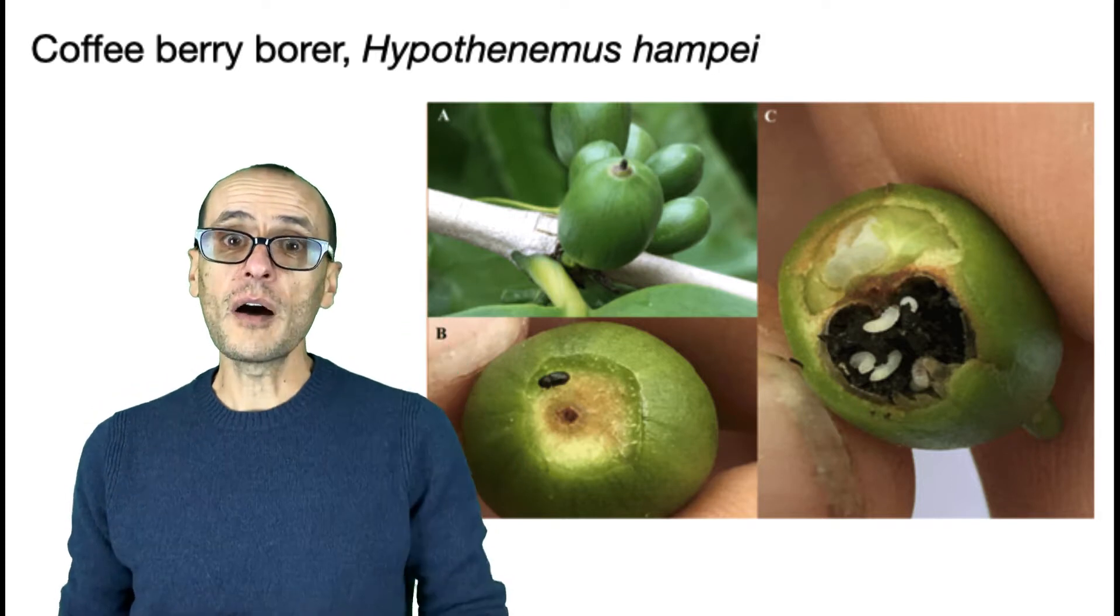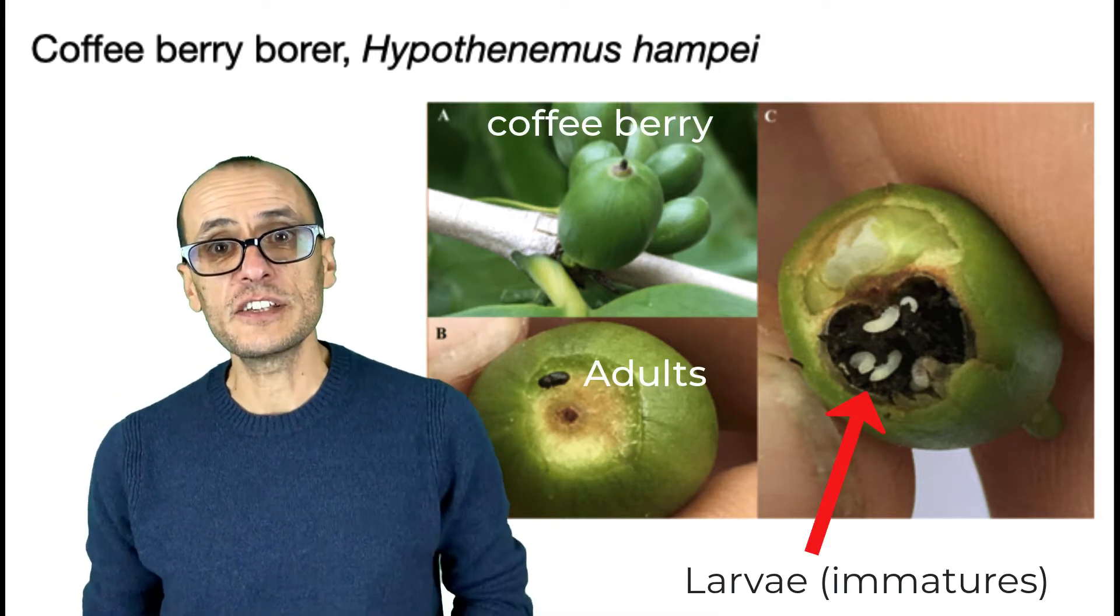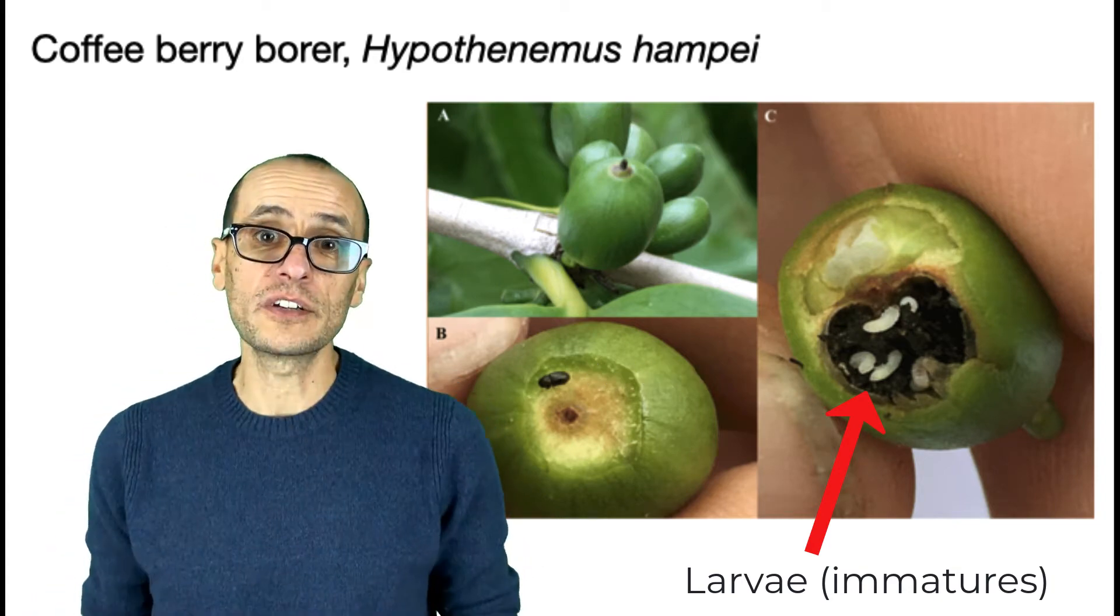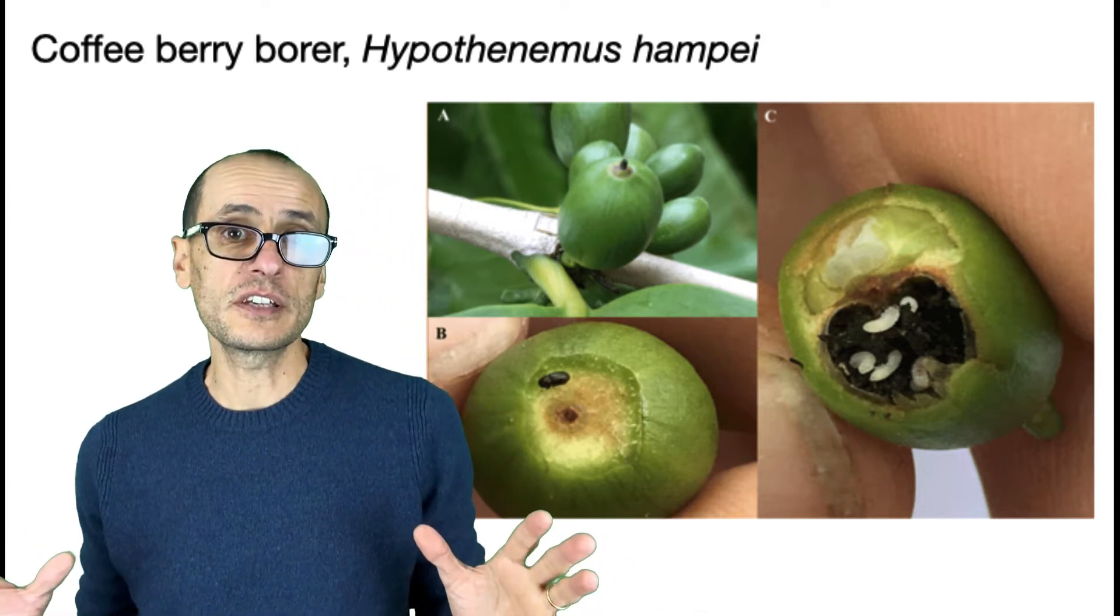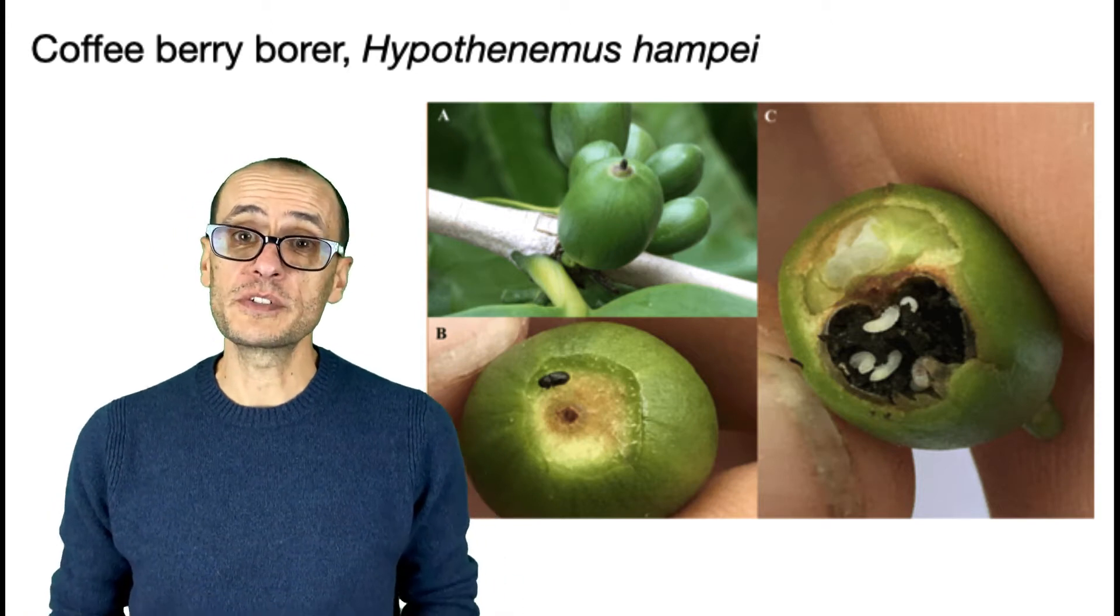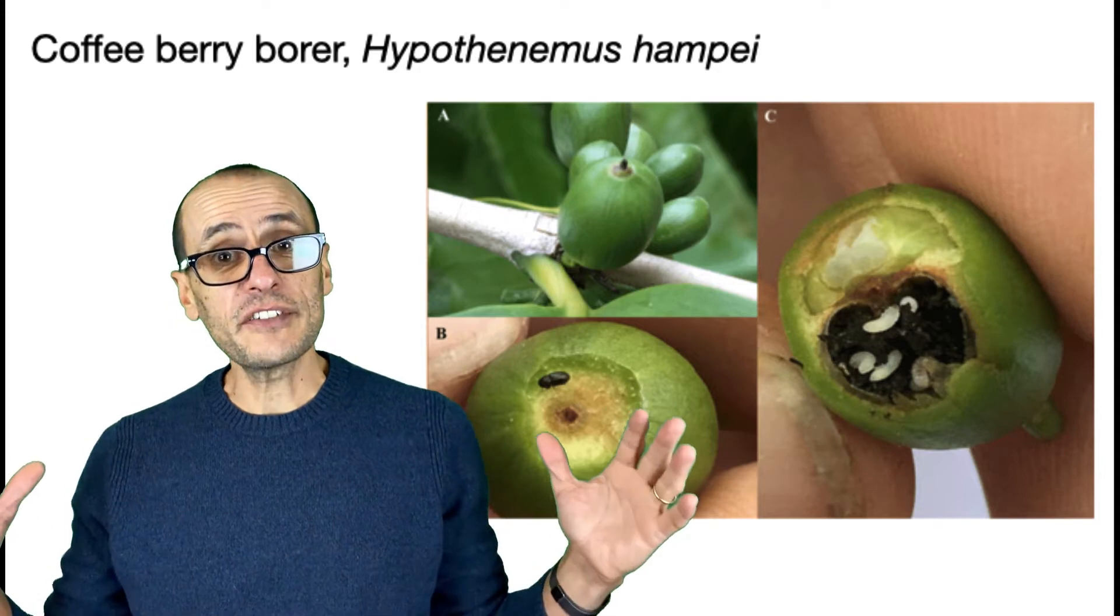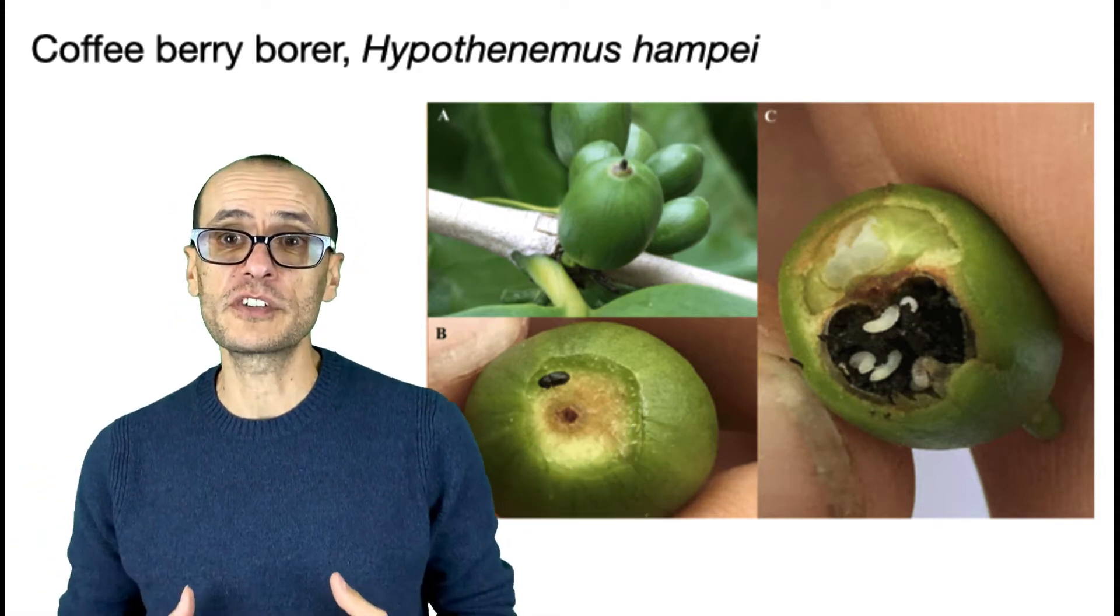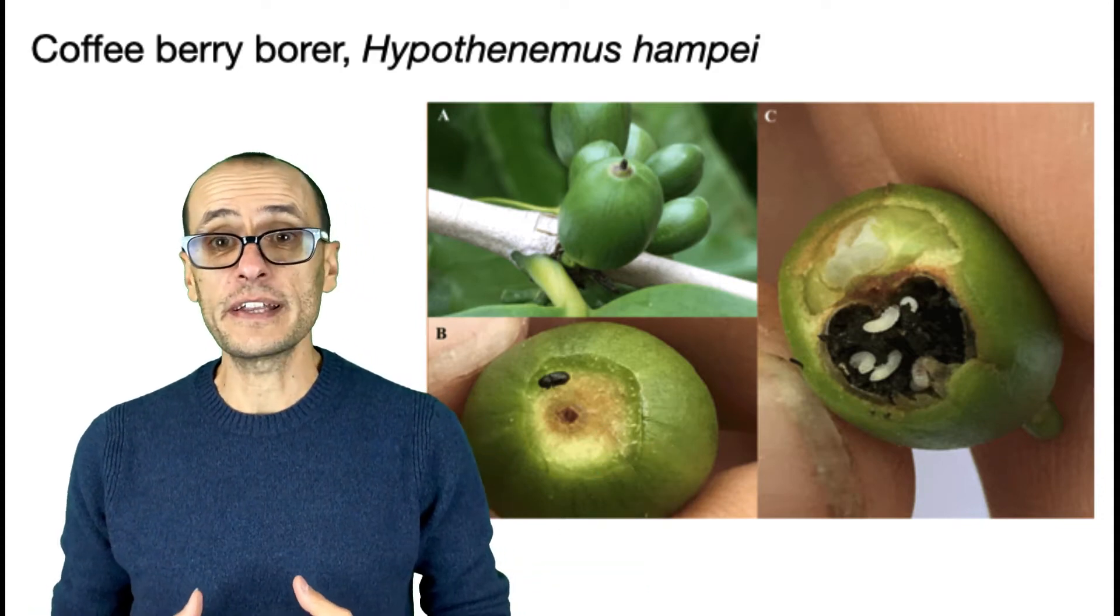The small but devastating coffee berry borer. This beetle is native to eastern Africa and feeds as larvae, these little white maggots here, within the berries of the coffee. It has now spread to most coffee-producing countries in the world. The first report of it in the Americas was in Brazil in the 1920s. By the 1970s, it had reached Central America, Guatemala, Mexico, big coffee-producing regions. And it found its way to Hawaii in 2010.